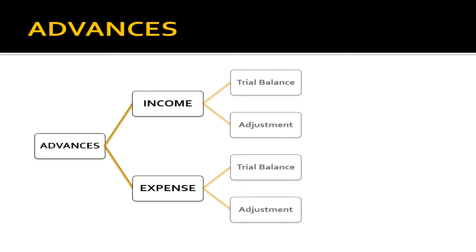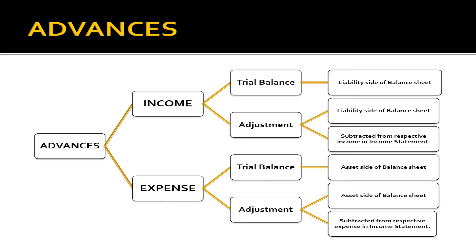Let's talk about advances. Advance income — if shown in the trial balance only, it is our liability. If advance income is shown in adjustments, it is a liability and also subtracted from the respective income in the income statement. For advance expenses, if given in the trial balance, it will be shown on the asset side of the balance sheet. If shown in adjustment, it will be shown on the asset side of the balance sheet and subtracted from the respective expense in the income statement.